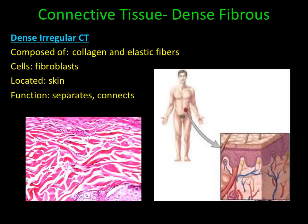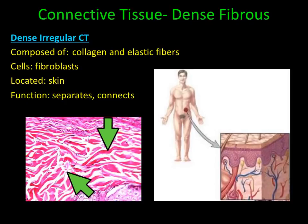Dense fibrous connective tissue is categorized as dense irregular connective tissue if the fibers run in different directions — in other words, if the fibers do not run parallel to one another. Dense irregular connective tissue also consists of collagen and elastic fibers, and can be found as part of the skin.